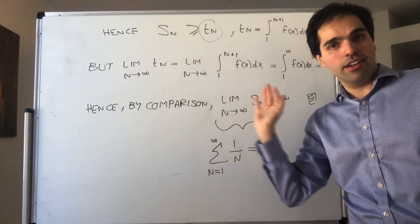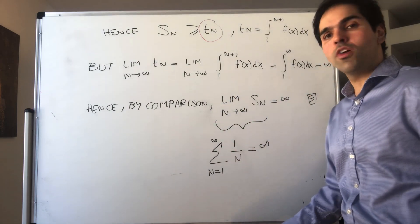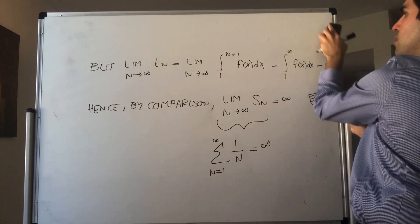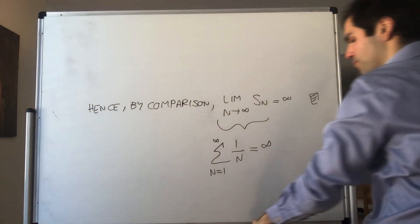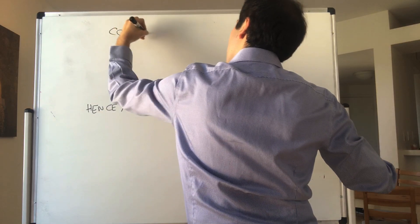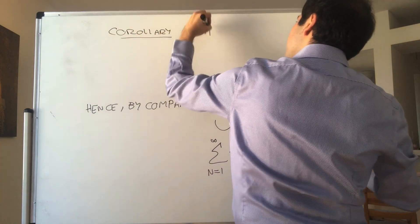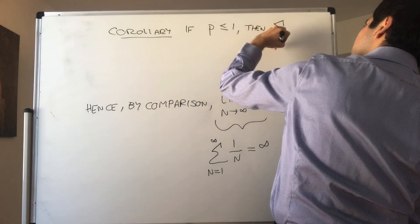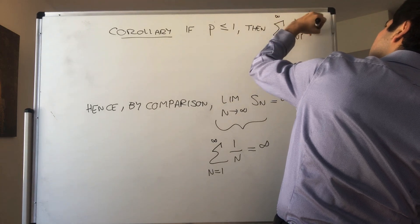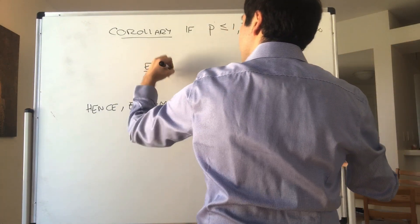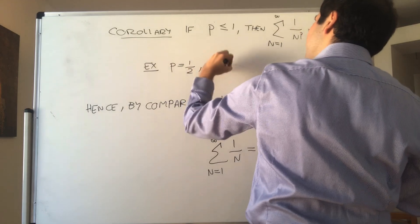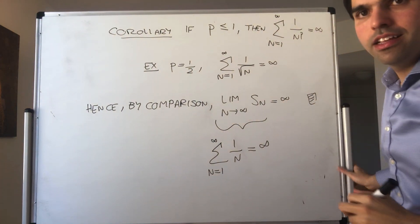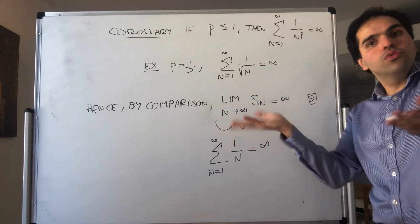We will prove the next part in the next video, but let me give you a quick corollary about what's called the P-series. If P is less than or equal to 1, then the P-series diverges: the sum from 1 to infinity of 1 over n to the P is infinity. For instance, with P equals 1 half, we get that the sum from n equals 1 to infinity of 1 over the square root of n diverges. To prove this, you could simply reuse the integral test, but there's actually an easier way.